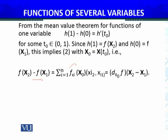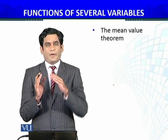This implies equation (2) with x naught equals x of t naught. That is, we have f of x2 minus f of x1 equals the summation of the partial derivative of f evaluated at x naught times xi2 minus xi1, which is in fact the differential of f evaluated at x naught into x2 minus x1.